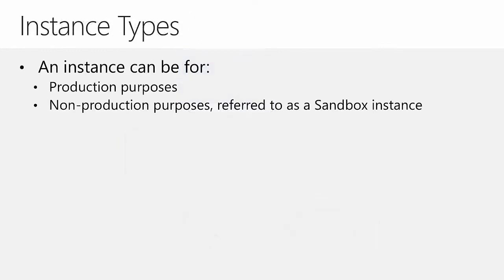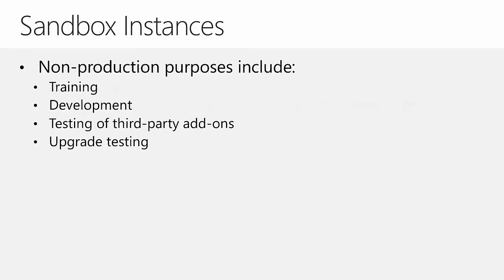Within a Dynamics 365 subscription, there can be two types of instances, and each subscription receives one of each type. The two types are production instances and non-production instances, also known as sandbox instances. Non-production instances are used for purposes such as training users, developing new customizations, testing new solutions, and testing whether existing customizations will work after an upgrade.